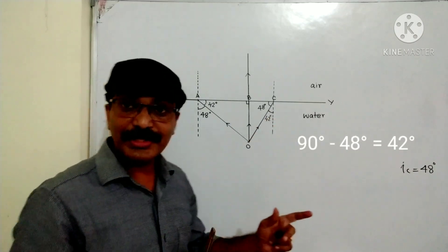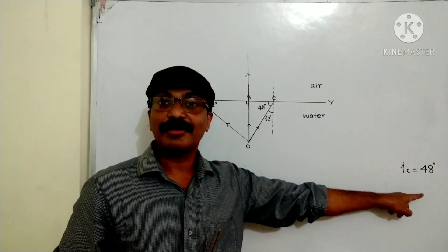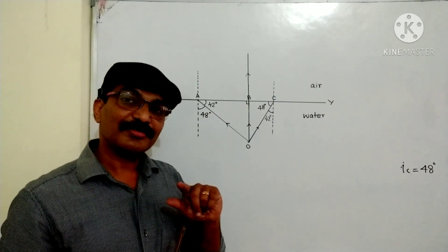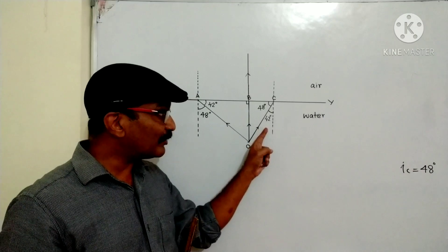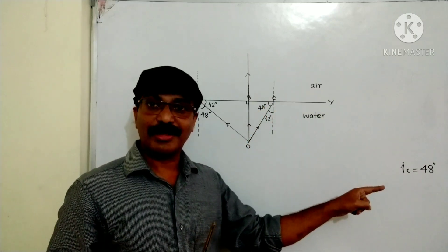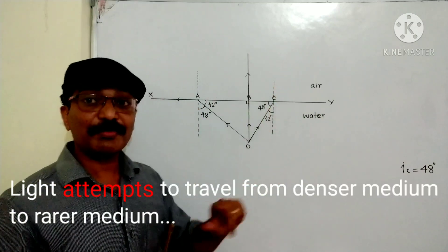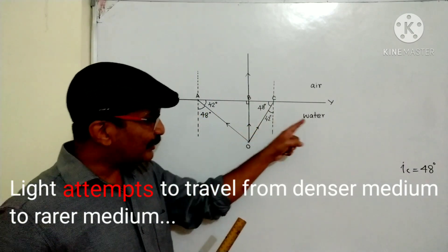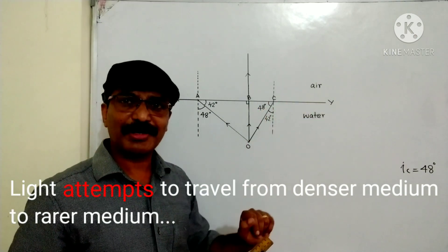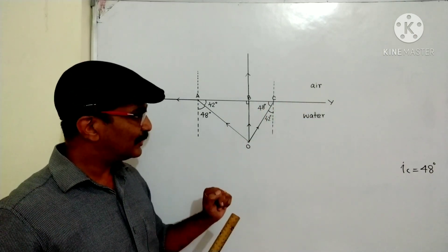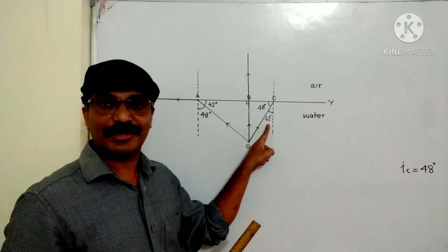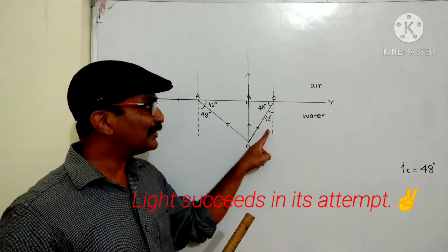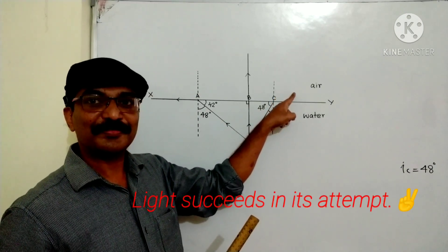This 42 degrees is less than the given critical angle. So what phenomenon will take place? If angle of incidence is more than critical angle and light travels from denser medium to rarer medium, total internal reflection takes place. Here, light is travelling from denser medium to rarer medium. That part is okay. But angle of incidence is not more than critical angle. So total internal reflection will not take place.